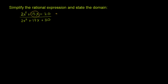You want to group one term with 2x² and one with 20, into two terms such that the coefficients of those two terms, when you take their product, equal 2 times 20. So you want to break 13x into ax plus bx, where a times b equals 2 times 20. We showed why this works in a previous video.